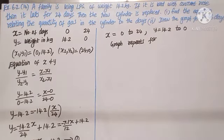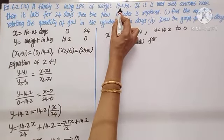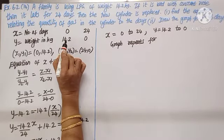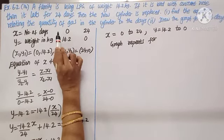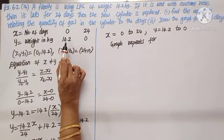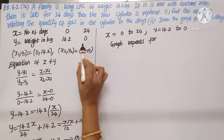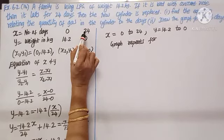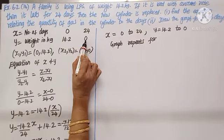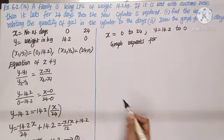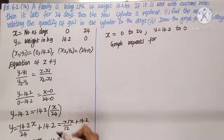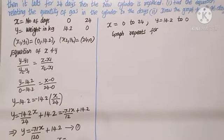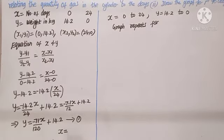Let X be the number of days and Y be the weight in kilograms. On day 0, when the cylinder is changed, Y is 14.2 kilograms. As time passes, gas weight decreases while days increase. On the 24th day the cylinder is empty, so gas weight is 0. Using the two-point form with (0, 14.2) and (24, 0), we get Y equals minus 71X over 120 plus 14.2. The negative sign confirms the gas keeps decreasing.